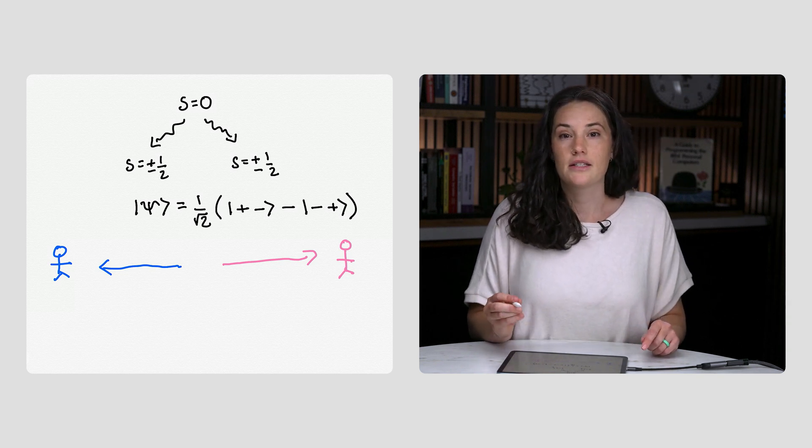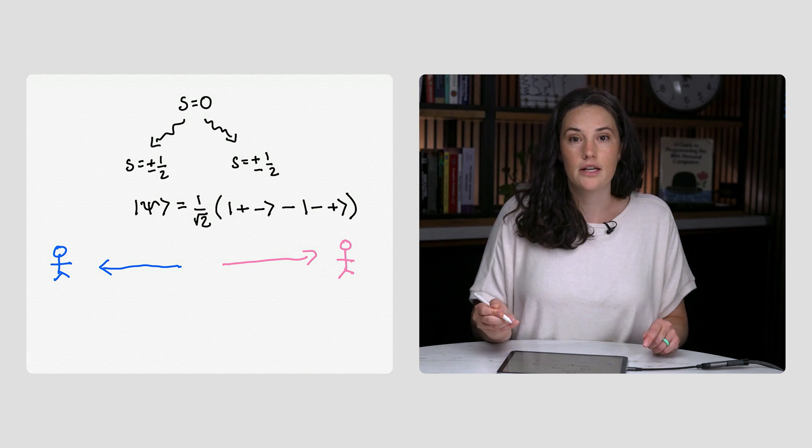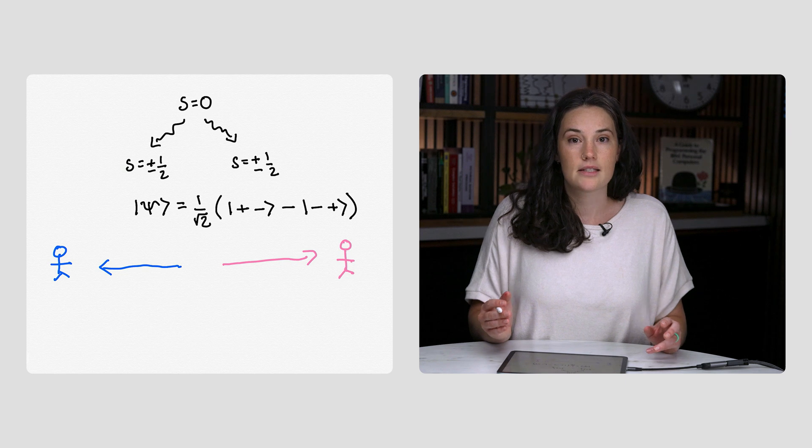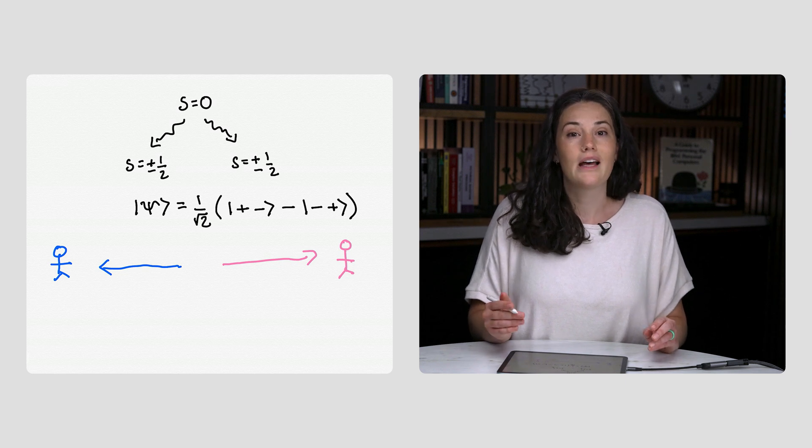If we send many copies of the entangled state to Lucas and Rihanna, they can collect measurement statistics. If they always measure along the same axis, these statistics will not be very interesting.